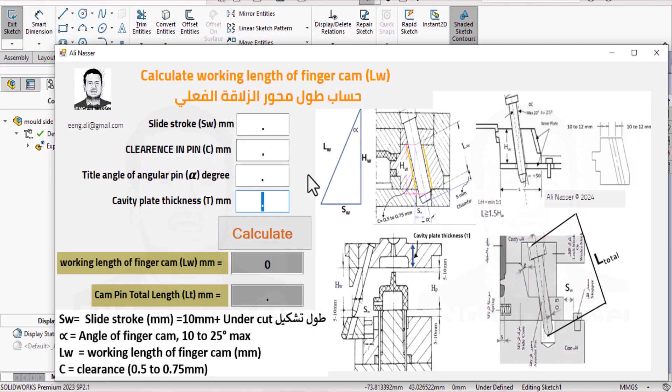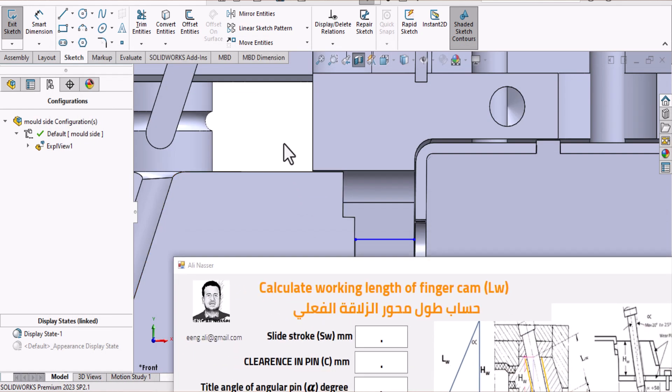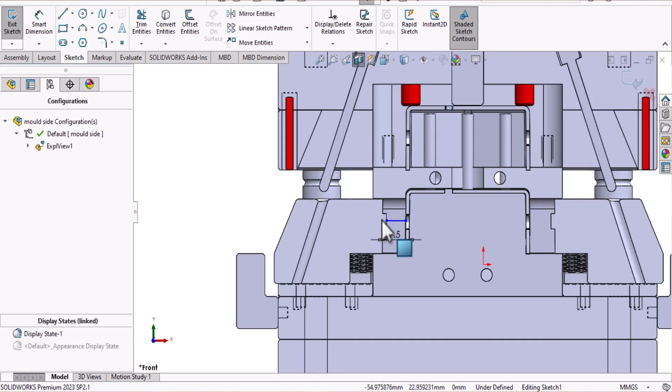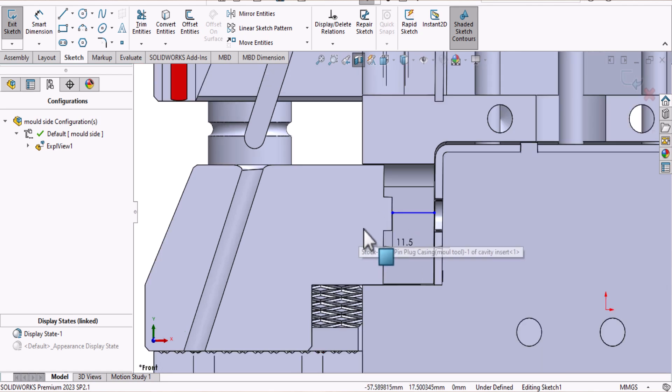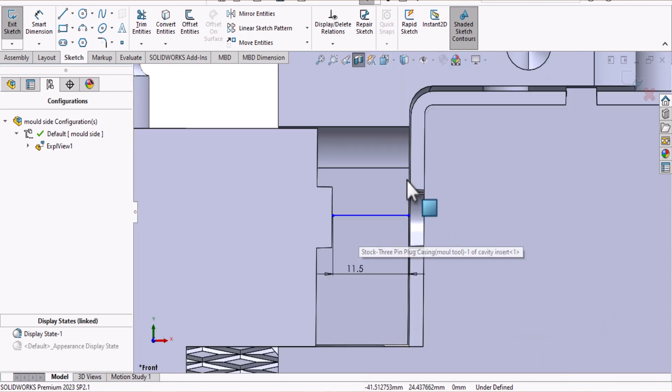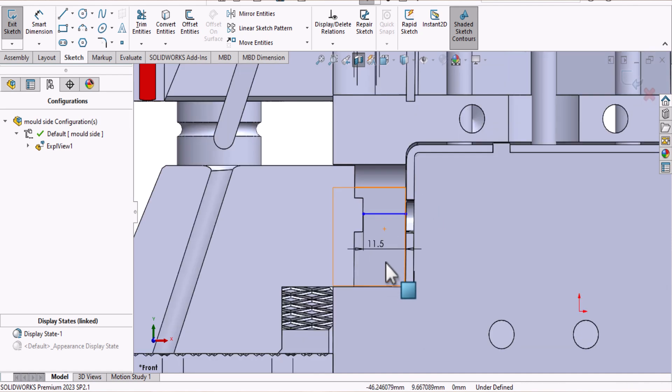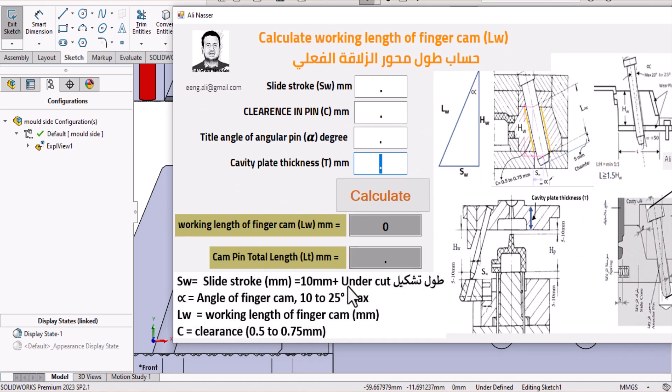Here I have developed a tool to calculate working length of finger cam based on some parameters. The most important parameter is the stroke length or block travel, which is based on the depth of undercut. This depth of undercut is around 2 to 2.5 millimeters, so I add 10 millimeters plus thickness of undercut, making the slide stroke around 11.5 millimeters.